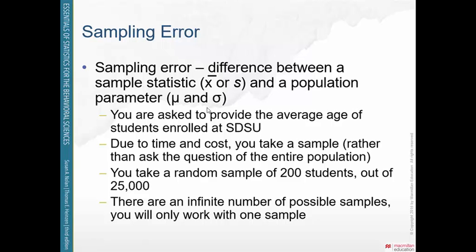Let's say you're a researcher asked to provide the average age of students enrolled at SDSU, San Diego State University. Due to time and cost, you decide to take a sample rather than asking the entire population. If there are 25,000 students, it would take too long. So instead, we take a random sample of 200 students out of the 25,000. That's our population, and we're using a sample of 200.